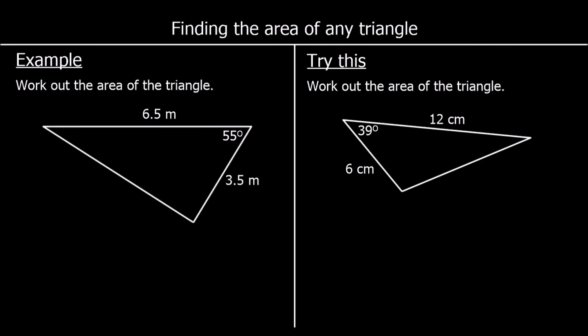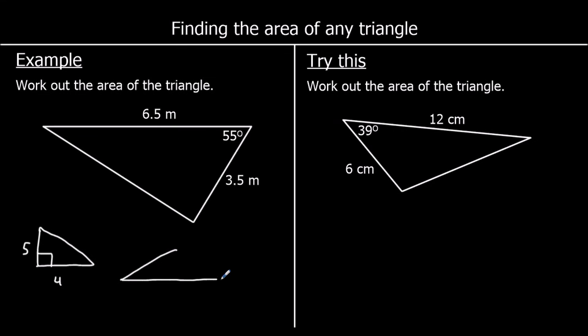When we know the perpendicular height of a triangle, we can work out its area using the formula half base times height. So if we had a right angle triangle and we knew its height and its base, or if we had a triangle and we were given the perpendicular height and the base, we can work out the area using half base times height.